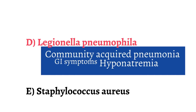Legionella is commonly treated with azithromycin or a fluoroquinolone. Immunocompromised patients should be treated with a fluoroquinolone because of the broad coverage. Remember, the constellation of pneumonia, GI symptoms, and profound hyponatremia is highly suggestive of Legionella, especially if the person infected has a history of lung disease or smoking.